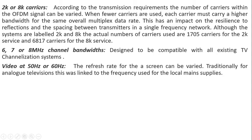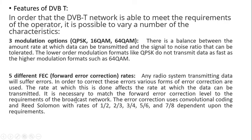DVB-T uses 2K or 8K carriers, and the actual number of carriers used is also specified as standard for the OFDM technique. The channel bandwidth can be 6, 7, or 8 MHz. It is compatible with all existing TV channelization systems, and the video refresh rate can be either 50 or 60 Hz. These are the characteristic features of DVB-T.